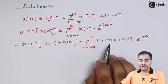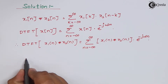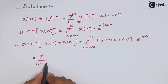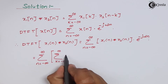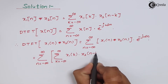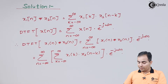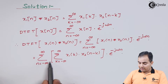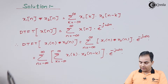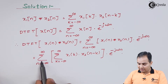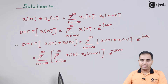Now I am going to substitute the definition of convolution — this whole equation — into the DTFT expression. I will take the summation over k from minus infinity to infinity with x1(k) outside the bracket, and take the summation over n from minus infinity to infinity with e to the power minus jωn inside the bracket.